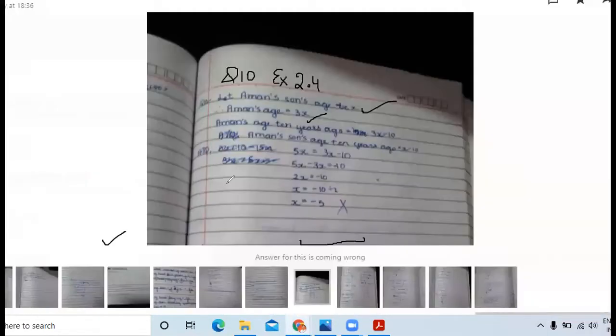Let us write something about this thing first. Aman's age ten years ago: 3x minus 10. But make sure you write in years. Here also, do this correction. Aman's son's age ten years ago: x minus 10. So is it clear or should I zoom in a little bit? It's clear. So x minus 10, till this thing it is clear I guess.